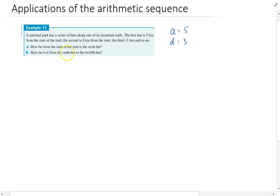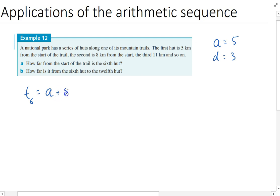How far from the start of the trail is the sixth hut? The sixth hut is term 6, which equals a + 5d. Five because it's n - 1, so 6 - 1.